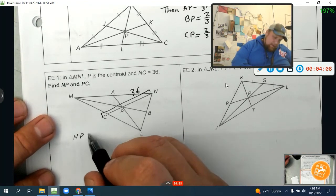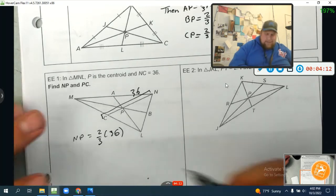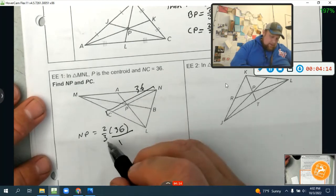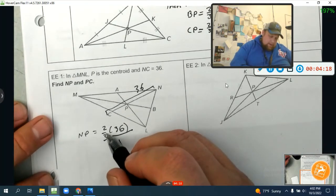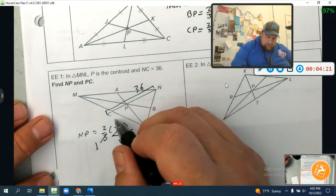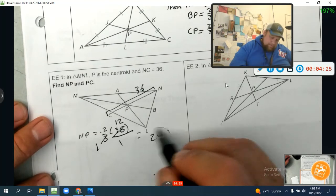Which I guess I do do it this way. It's just you're dividing by three, right? And multiplying times two. So when I divide by three, three goes in three once, 36, it goes into 12 times. And what's two times 12? It's 24. Boom. So that's NP.